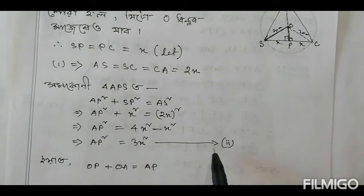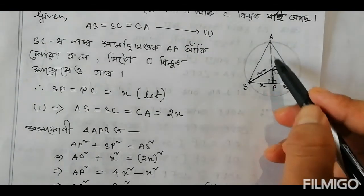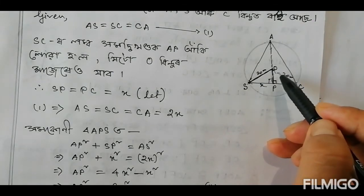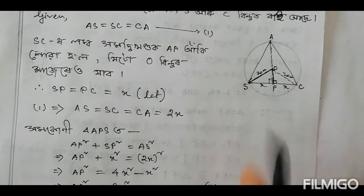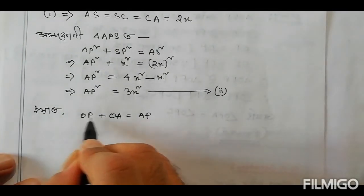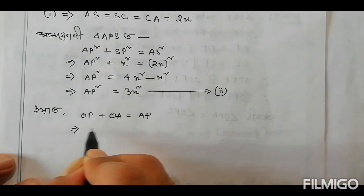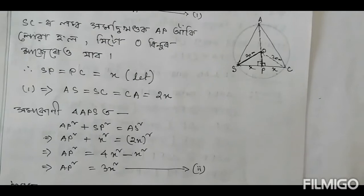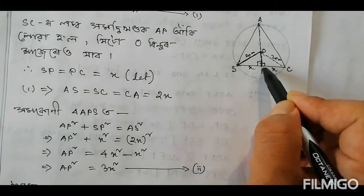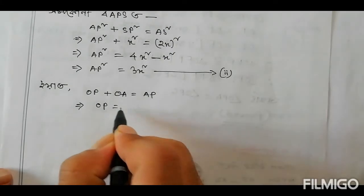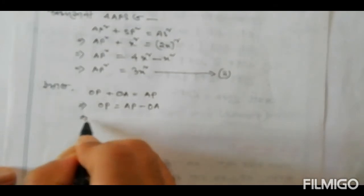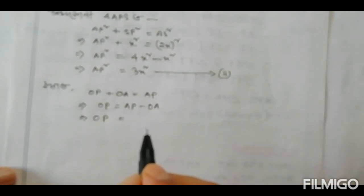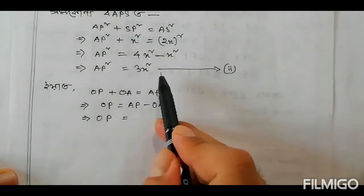AP square equals 3x square — side change: AP square equals 3x square. So OP plus OA gives the complete AP. Let us write that and do the calculation: OP equals AP minus OA.